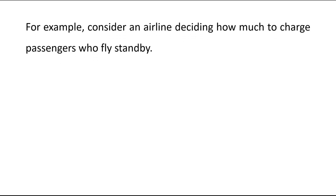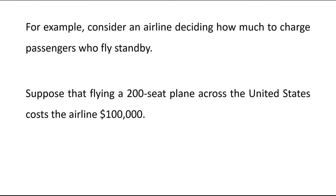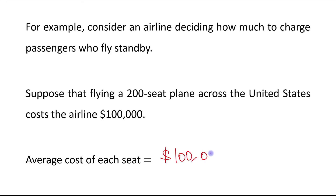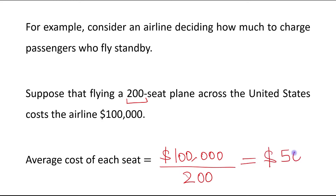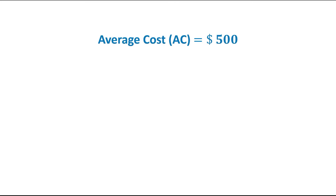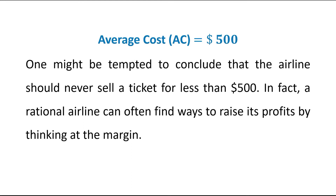For example, consider an airline deciding how much to charge passengers who fly standby. Suppose that flying a 200-seat plane across the United States costs the airline $100,000. In that case, the average cost of each seat can be calculated as total cost ($100,000) divided by number of seats (200), which equals $500. So basically, average cost (AC) equals $500.